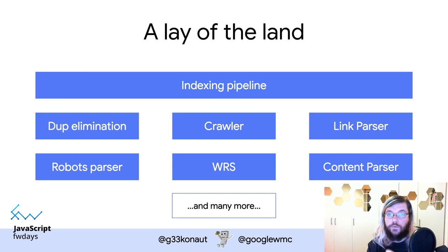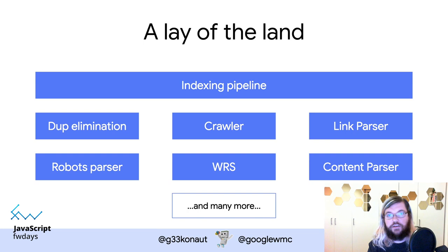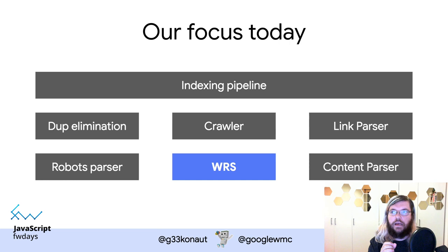There are many different services involved: duplication elimination, the actual crawler, link parsing from HTML, web rendering, robots.txt parsing, content type parsing for PDFs, spam detection, and more. Today we're focusing entirely on the web rendering service, ignoring everything else. We assume Googlebot has already fetched content from your website respecting robots.txt, and now we want to figure out how to get the result of your JavaScript web app running.